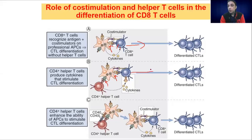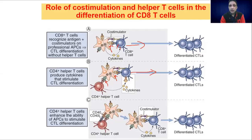CD4 helper T cells can thus drive differentiation of CD8 cells into cytotoxic T cells. This is a kind of direct activation — activation at one place, or activation at one site on one dendritic cell.